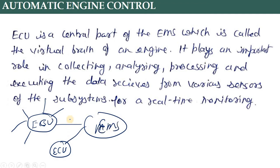Engine Management System, EMS, is the central part which is called the virtual brain of the engine. It plays an important role in collecting, analyzing, processing, and executing data received from various sensors. ECU is just like the CPU in our computer. But there are two ways to read about this ECU - we have talked about smart sensors, every smart sensor has its own microprocessor, its own memory, that means its own processing unit.